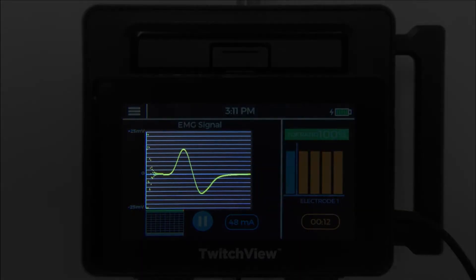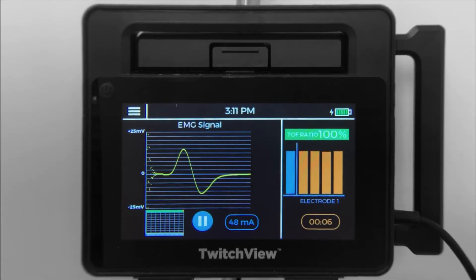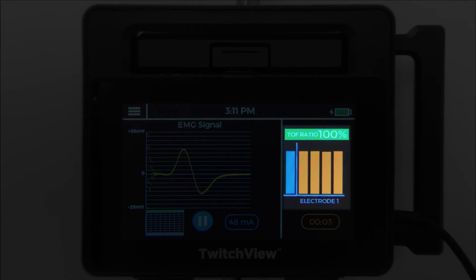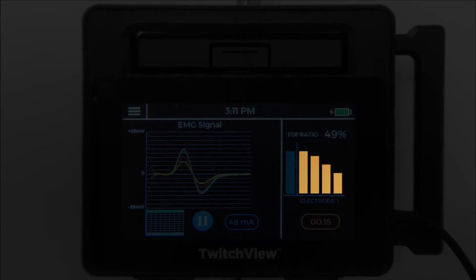On the left side of the screen, you will see the raw EMG waveform. On the right side of the screen, you will see the most recent TRAIN-4 measurement. The blue bar represents the patient's pre-paralytic measurement, and the orange bars represent real-time measurements or twitches.